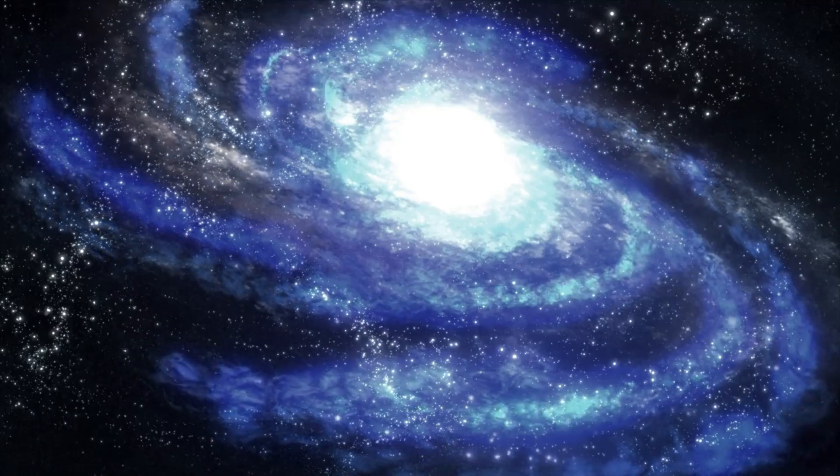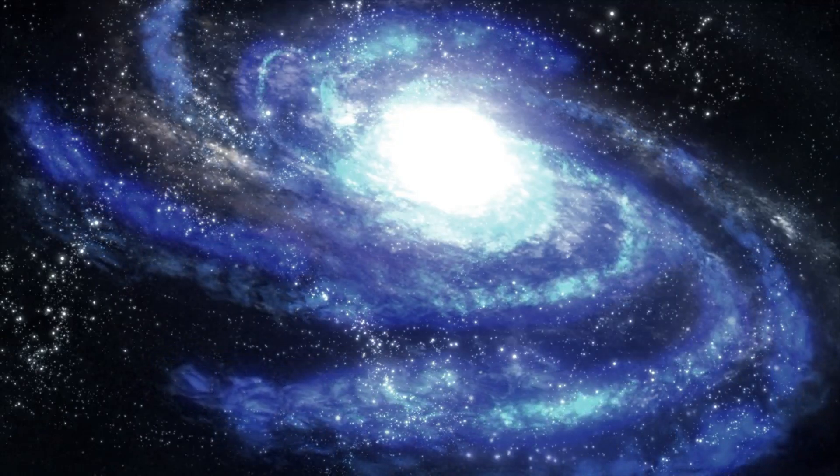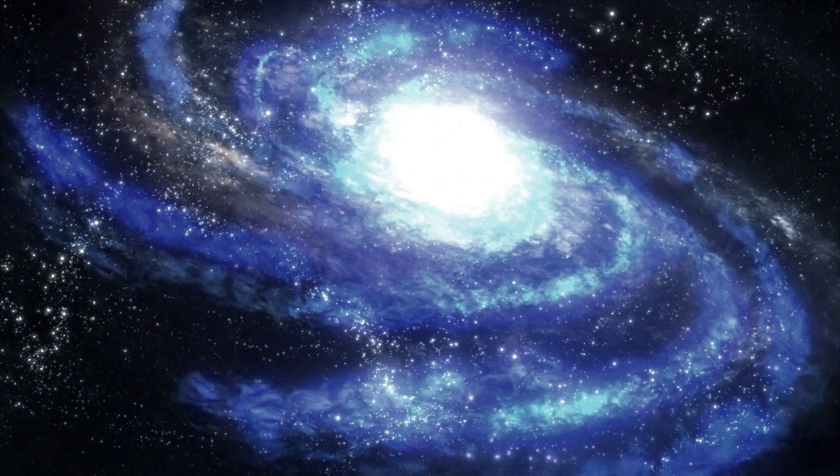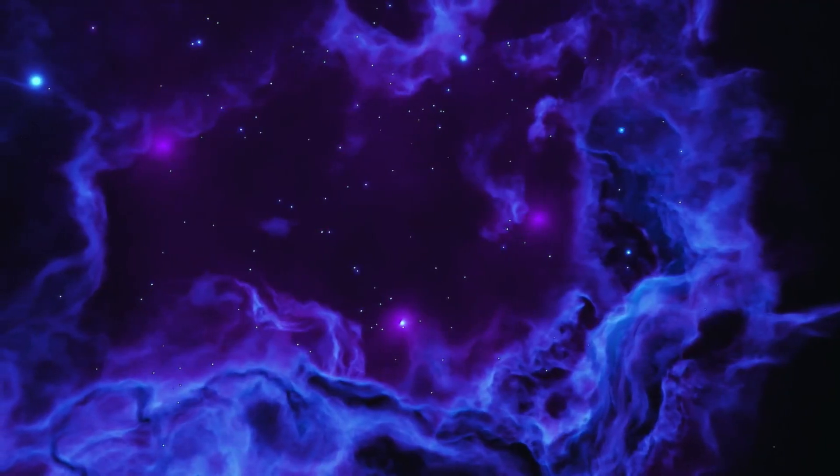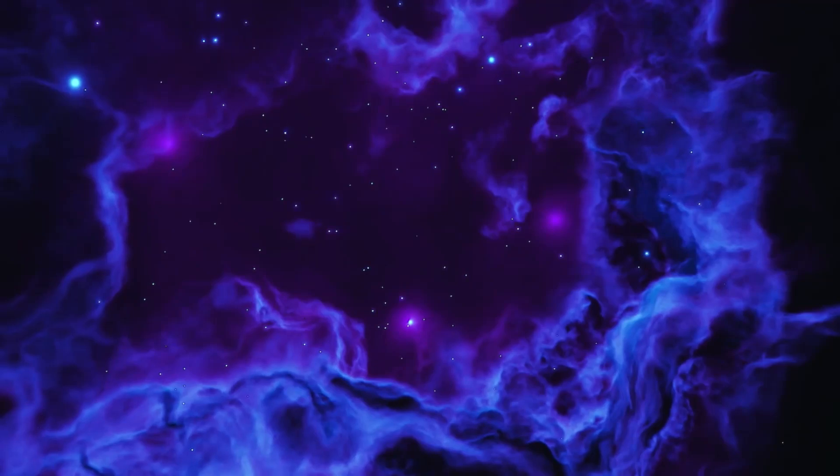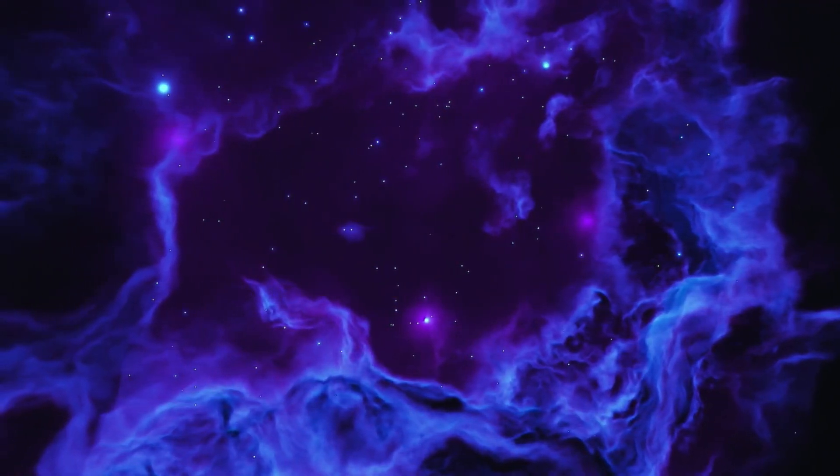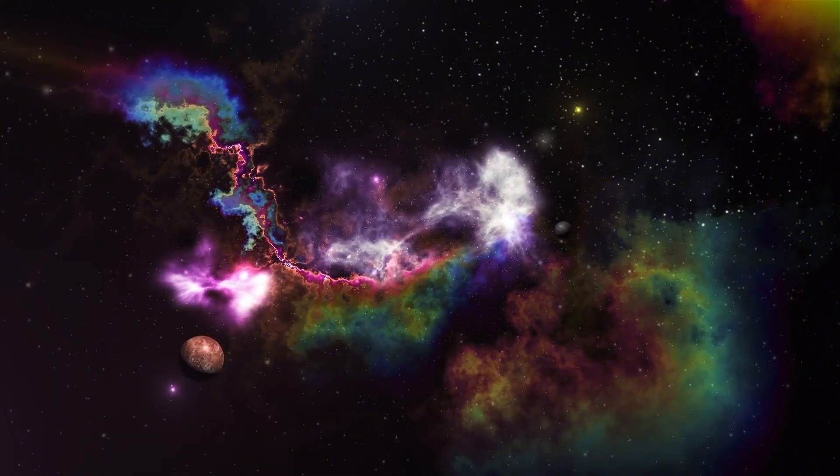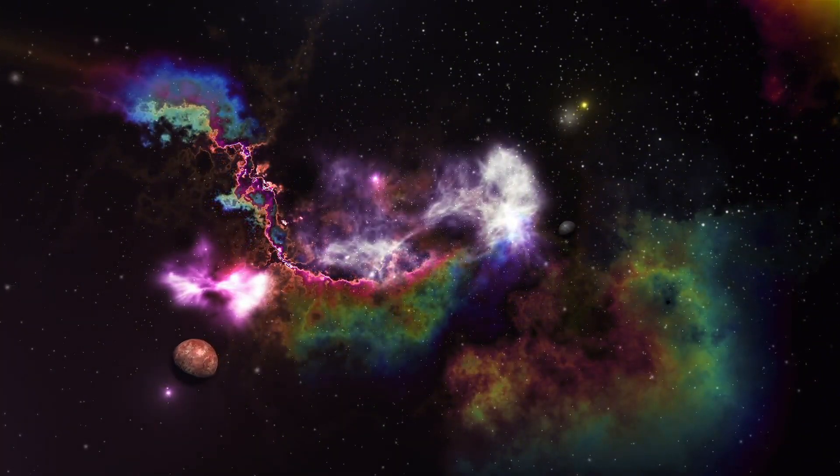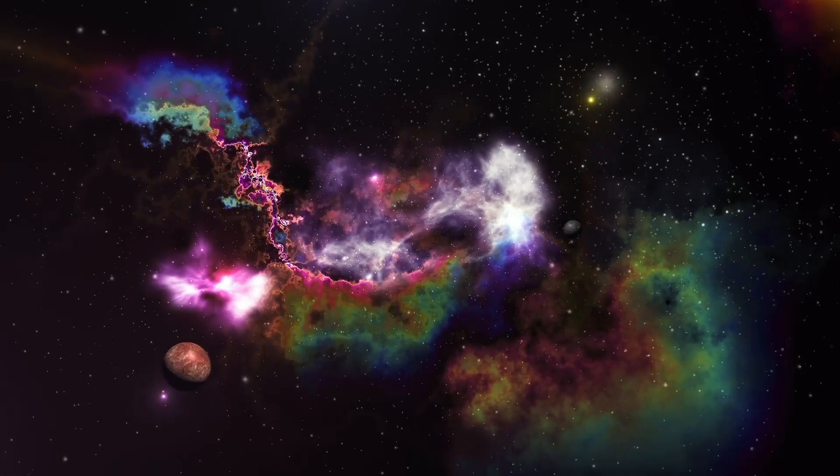And let's not forget about terrestrial exoplanets, those that resemble our own Earth. These planets come in various sizes, ranging from smaller than Earth to twice its size. There are also super-Earths which have masses greater than twice that of our planet, but are lighter than Neptune.